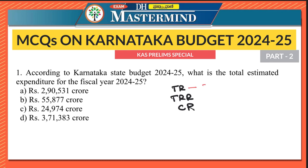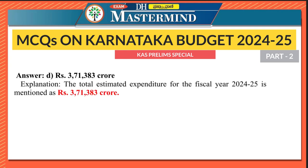The total receipts is 368,674 crore rupees. According to Karnataka State Budget 2024-25, what is the total estimated expenditure for the fiscal year 2024-2025? Expenditure is usually more than receipts, so the option more than 368,674 crore is 371,383 crore. The right option is option D — the total estimated expenditure is 371,383 crore.